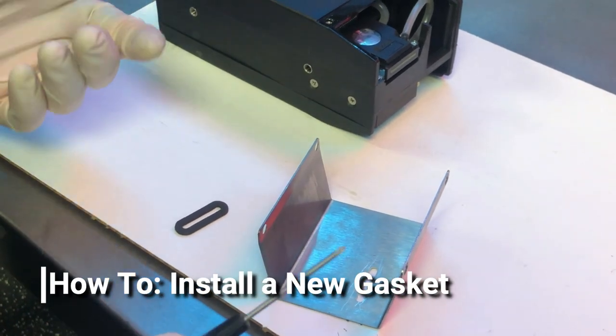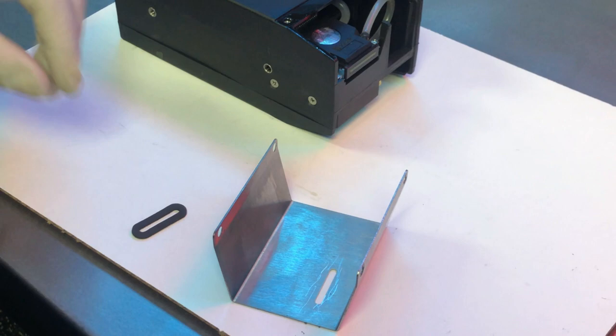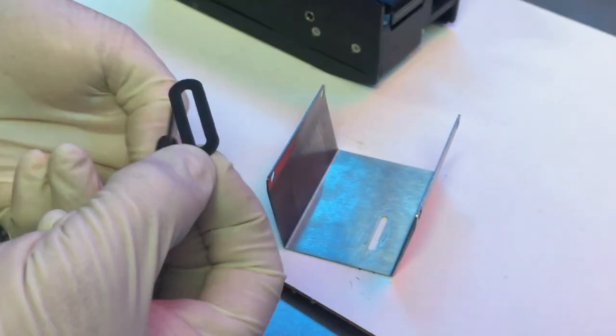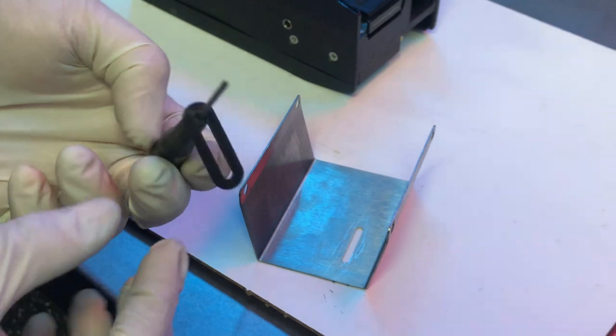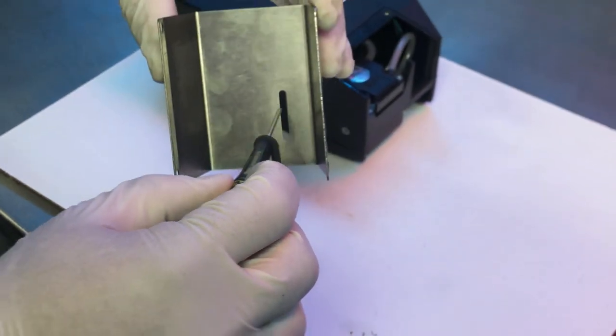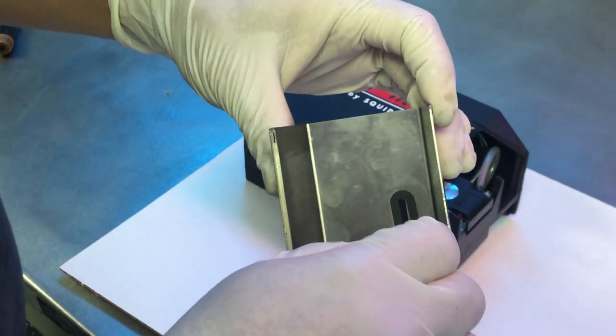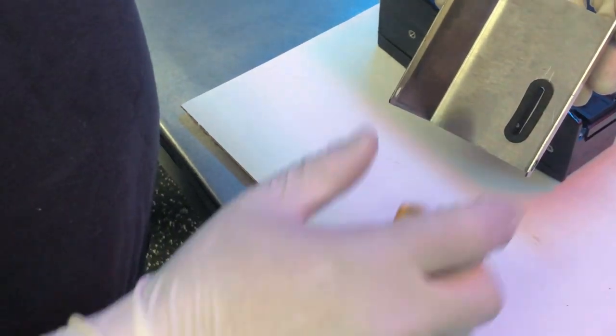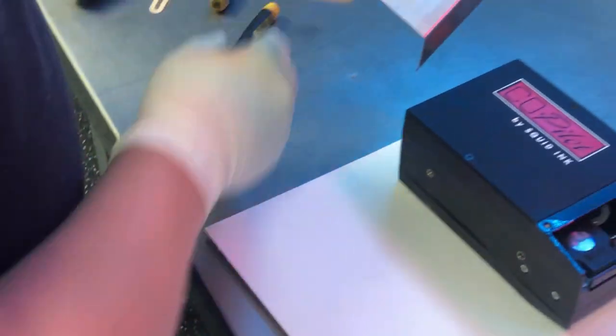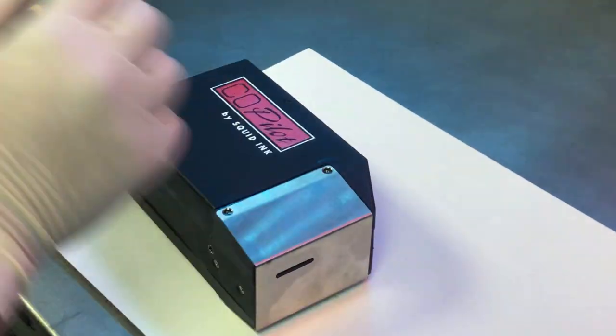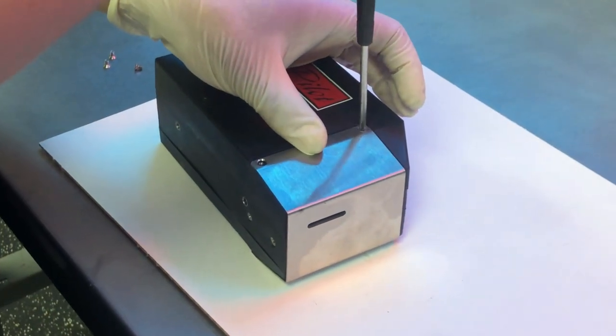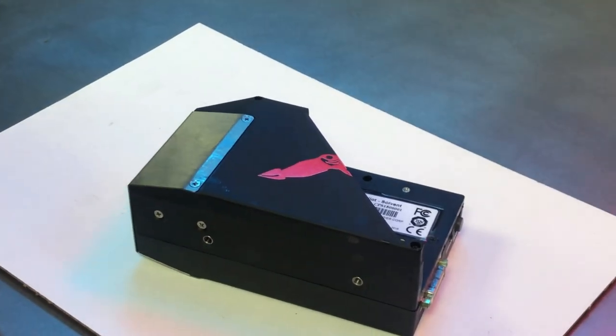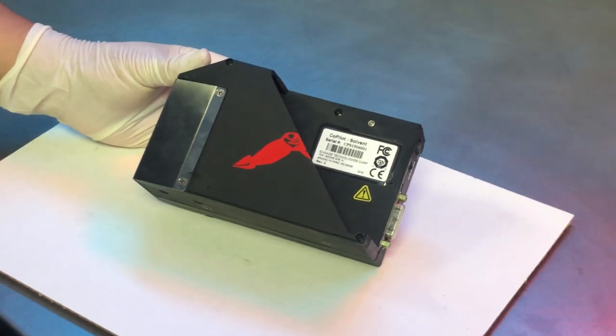To install the gasket, you'll want a small screwdriver or something that you can use to line it up. We'll go ahead and peel the film off the back. And I like to place it on the screwdriver like so. This will allow you to line up the gasket with the orifice. Now it's ready to be installed. And that completes our assembly of the 128A co-pilot printhead.